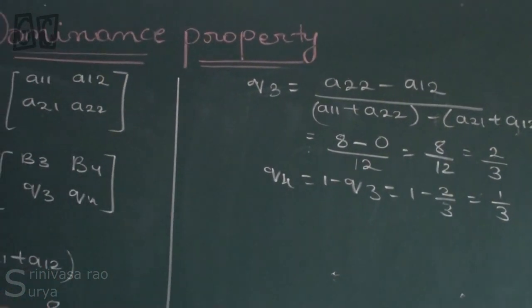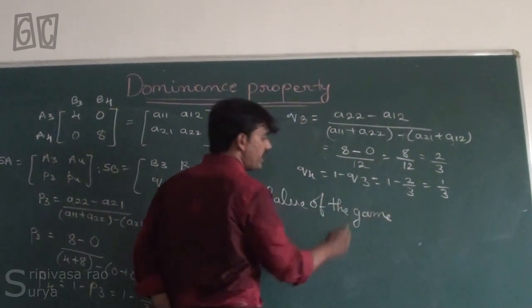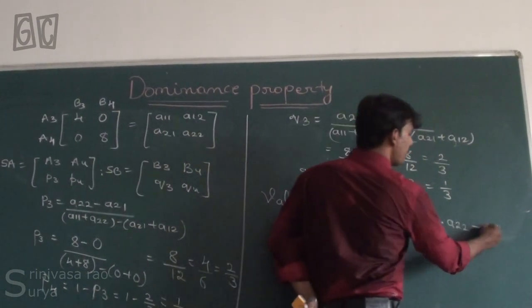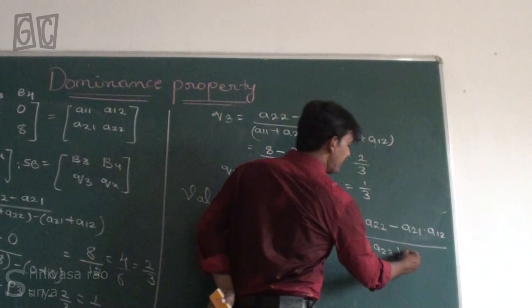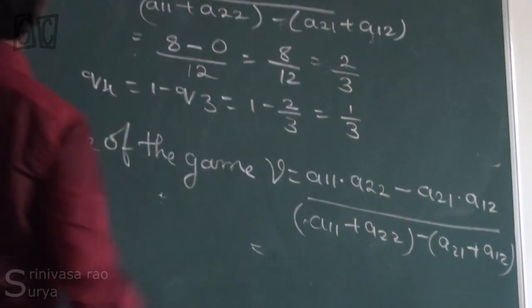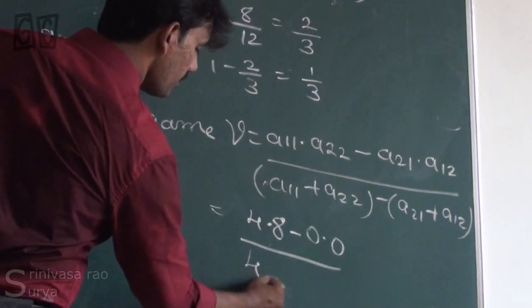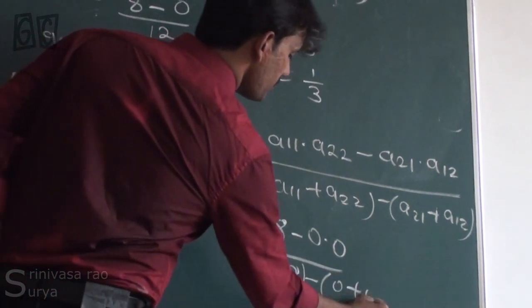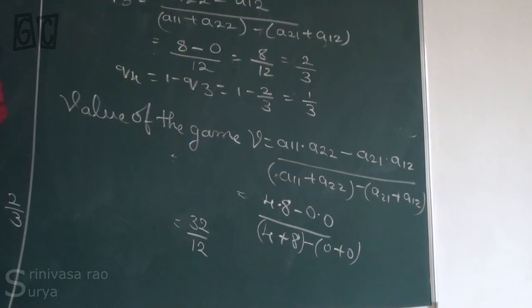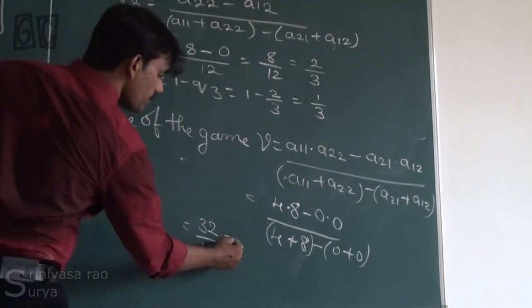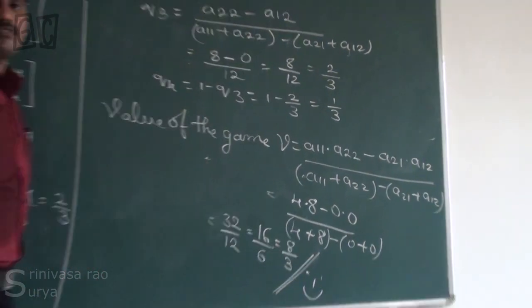We have calculated the mixed strategy charges for player A and player B. Finally, the value of the game V = (A11 × A22 − A21 × A12) / (A11 + A22 − A21 − A12) = (4×8 − 0×0) / 12 = 16/12 = 8/3. Thanks a lot for watching this video. Thank you.